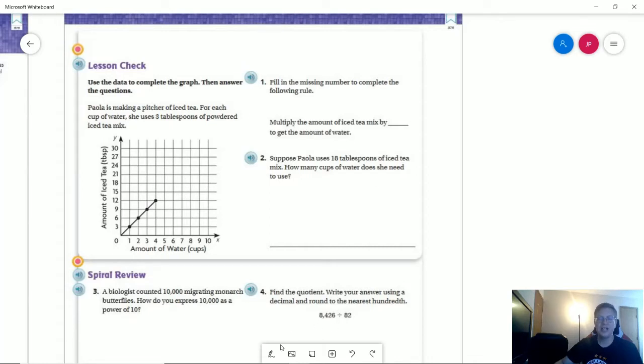We're essentially multiplying by one-third. For every three tablespoons of iced tea mix, I use a cup of water. So if I use 18 tablespoons of iced tea mix...